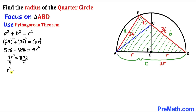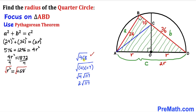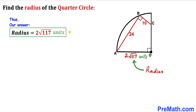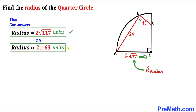So r² = 468. Taking the square root of both sides, we get r = √468. Breaking down 468 = 4 × 117, this simplifies to r = 2√117. Therefore, the radius r turns out to be 2√117 units, which is approximately equal to 21.63 units.